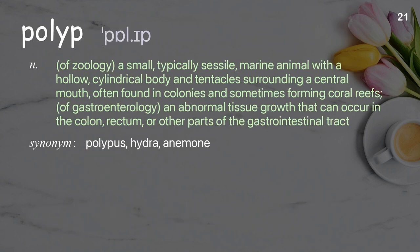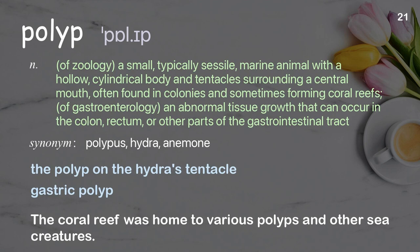Polyp. In zoology, a small, typically sessile, marine animal with a hollow, cylindrical body and tentacles surrounding a central mouth, often found in colonies and sometimes forming coral reefs. In gastroenterology, an abnormal tissue growth that can occur in the colon, rectum, or other parts of the gastrointestinal tract. Examples: The polyp on the hydra's tentacle, gastric polyp. The coral reef was home to various polyps and other sea creatures.